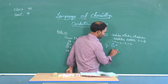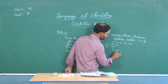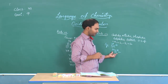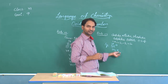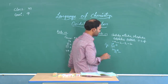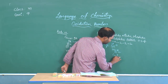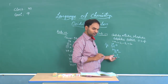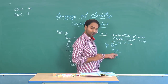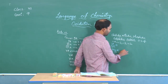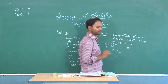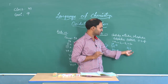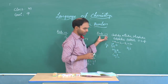For nitrides, take magnesium nitride (Mg₃N₂) as an example — nitrogen exhibits an oxidation state of minus 3. For phosphides, take calcium phosphide (Ca₃P₂) — calcium exhibits +2 valency and phosphorus exhibits minus 3 oxidation state. For sulfides, take H₂S — sulfur exhibits minus 2 oxidation state.